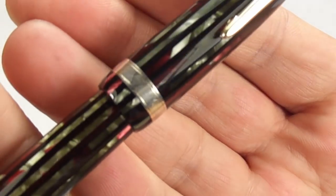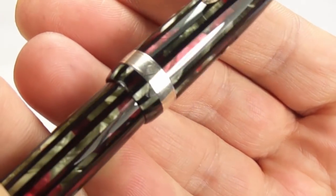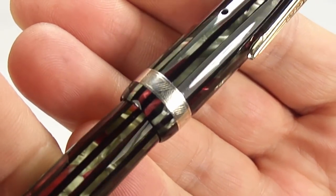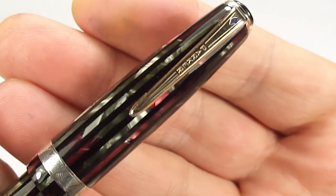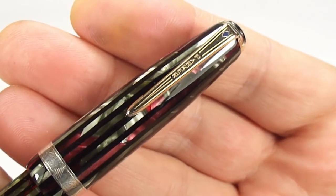Now, if we take you to the cap there, you can see it's got this quite a thick cap band and it's got this sort of traditional chevron pattern to the cap band. And let's show you the clip on this pen, slightly different from what we normally see.